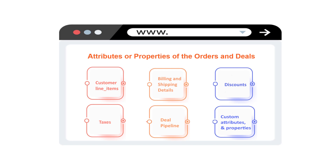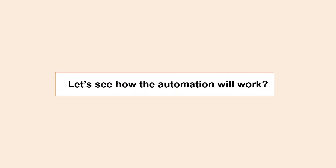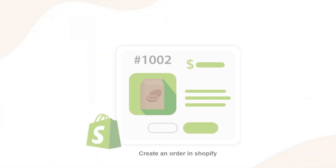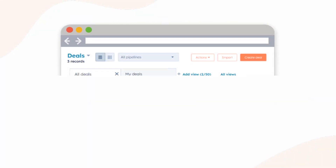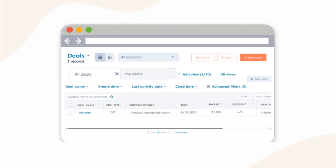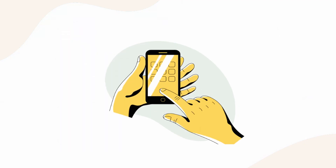Voila, it's all set. Let's see how the automation will work now. In Shopify, create an order, and then go to HubSpot's deals — and here it is, with all the properties configured.